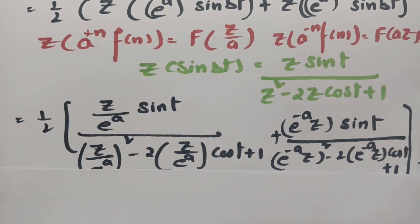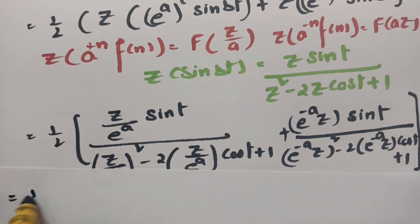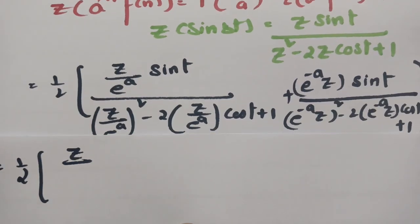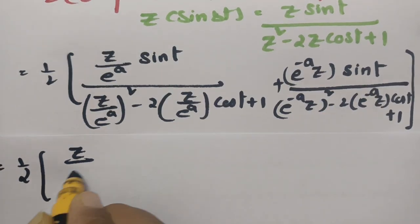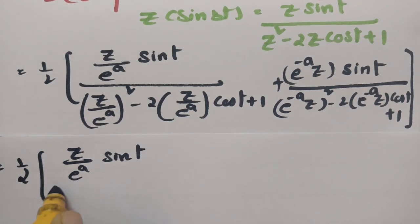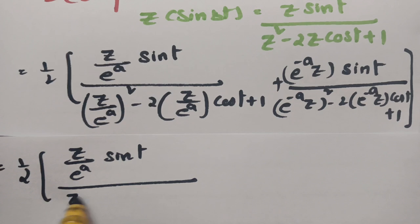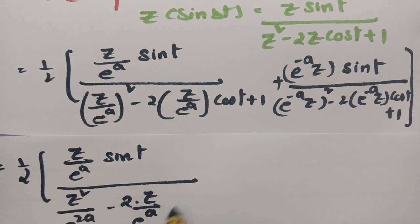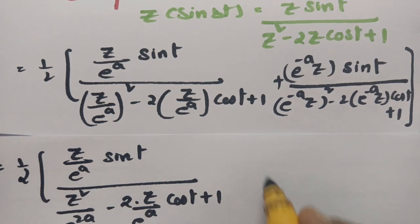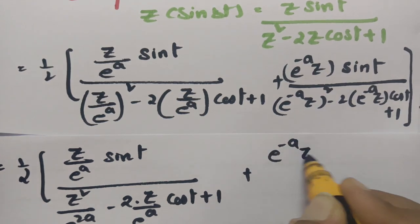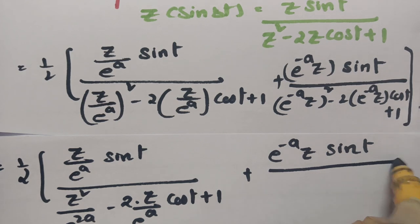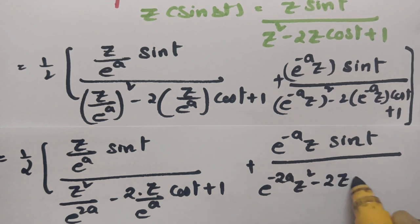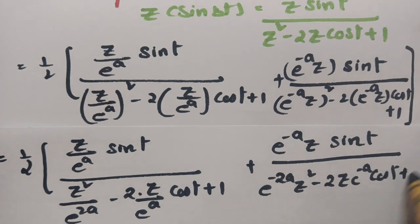So clearly this is half times of Z by e power a into sin(t) by: Z square by e power 2a minus 2Z by e power a into cos(t) plus 1. And here it is e power minus a into Z into sin(t) by: e power minus 2a into Z square minus 2Z into e power a into cos(t) plus 1.